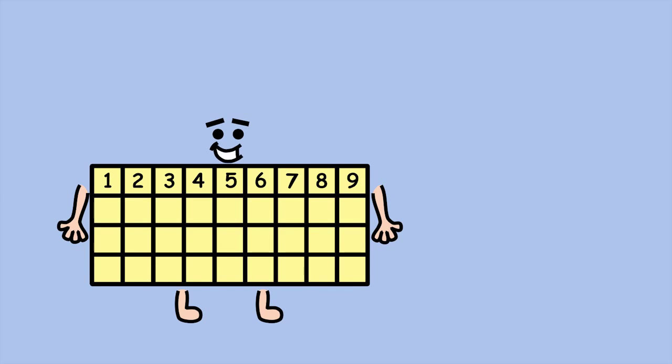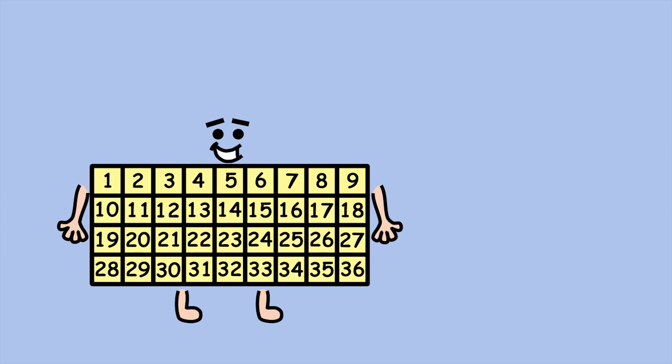So you can use skip counting by nines to add up the total number of squares: 9, 18, 27, 36.